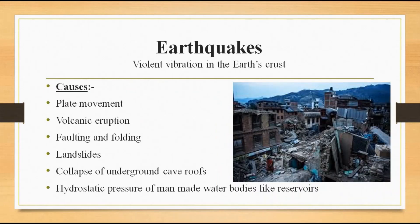Next, let us discuss about another biggest and violent natural disaster - earthquake. What is an earthquake? It is a violent vibration in the earth's crust, the outer cover. It is one of the worst natural hazards which often results in disaster and creates huge destruction. Tsunami is actually large waves generated by an earthquake inside the sea.